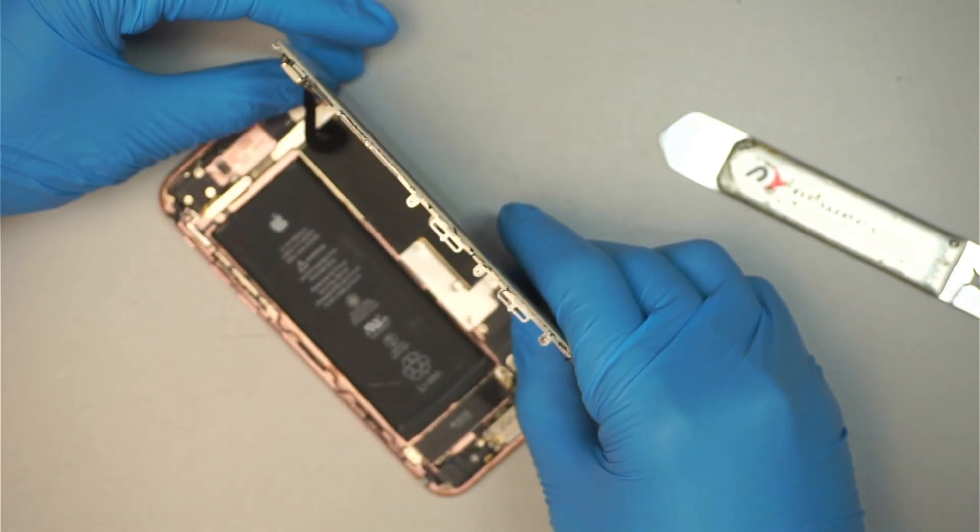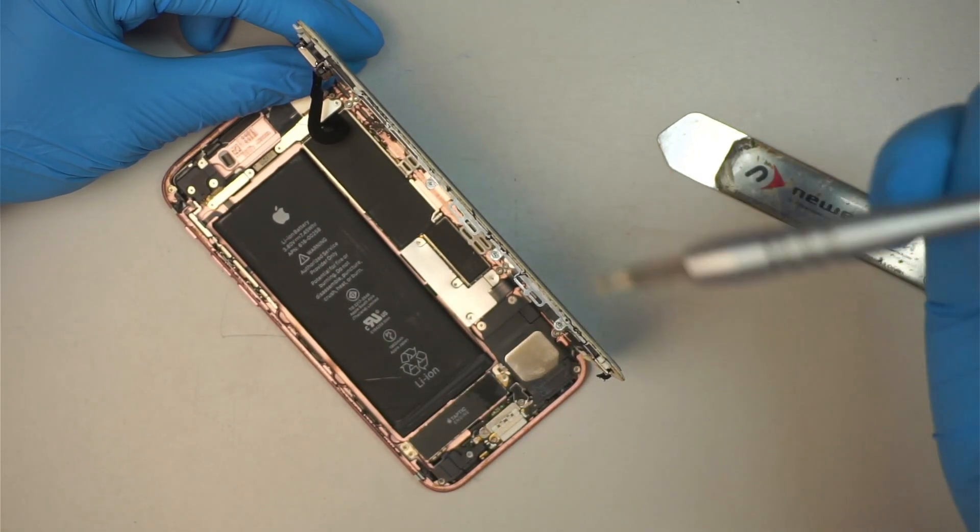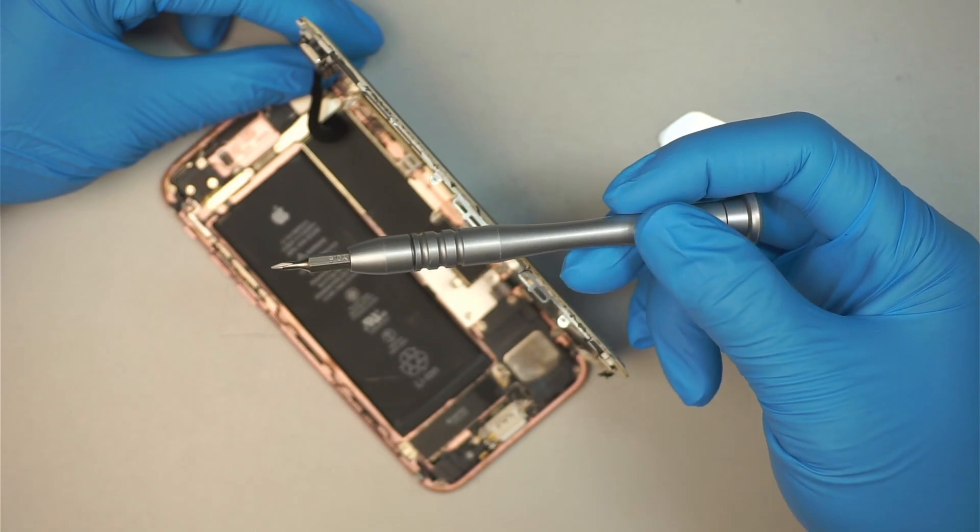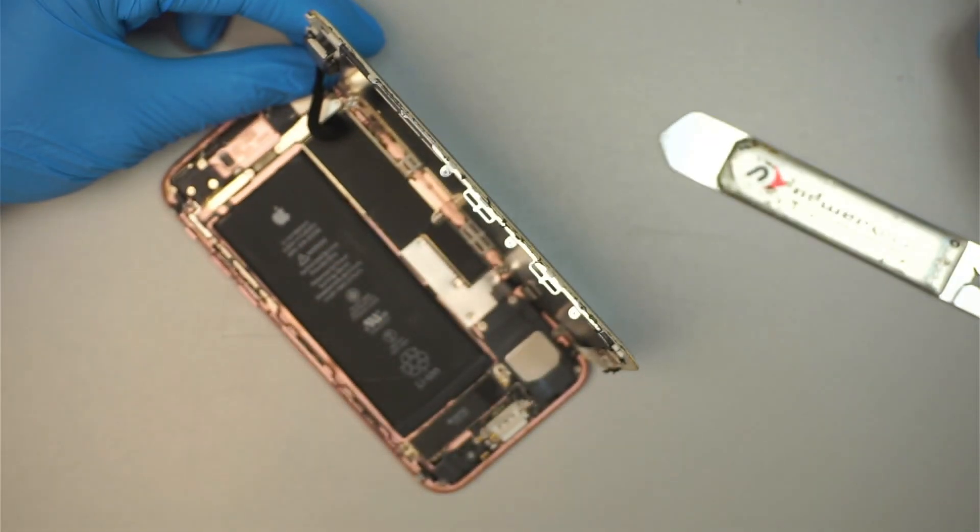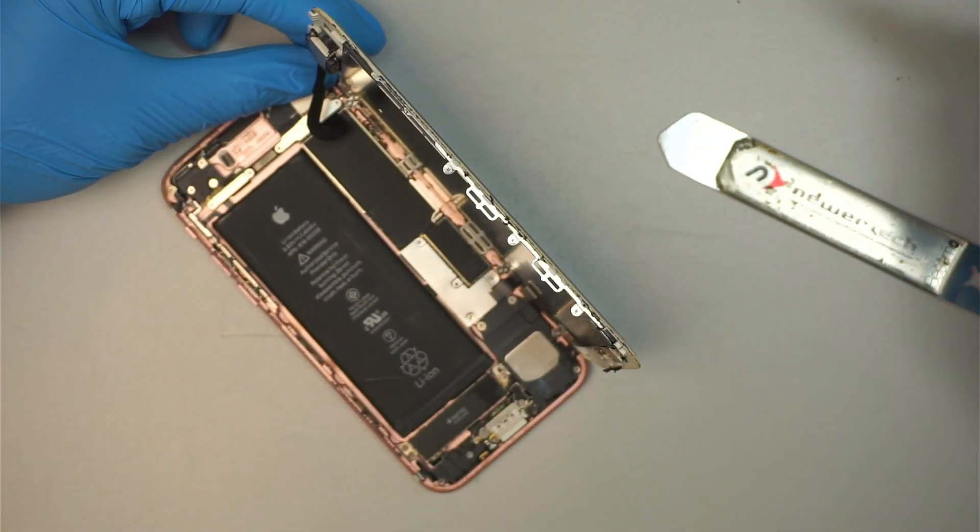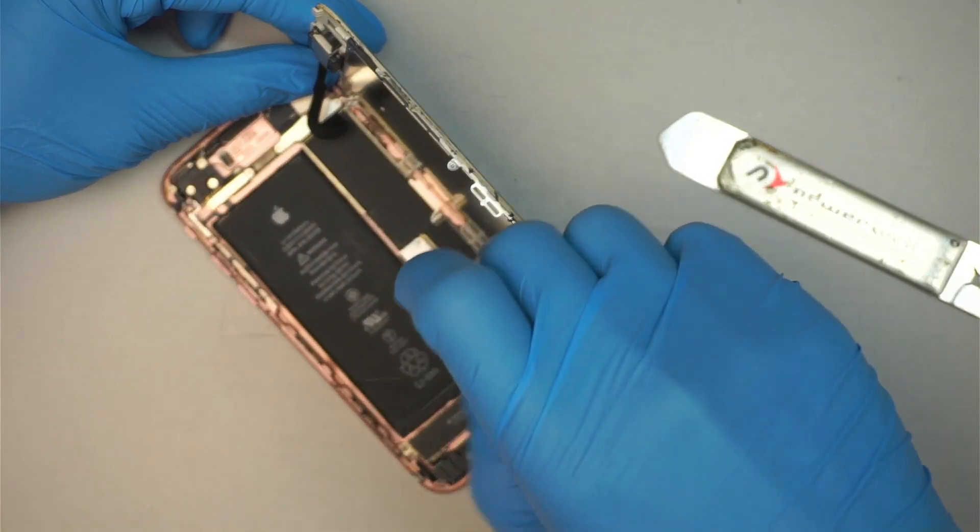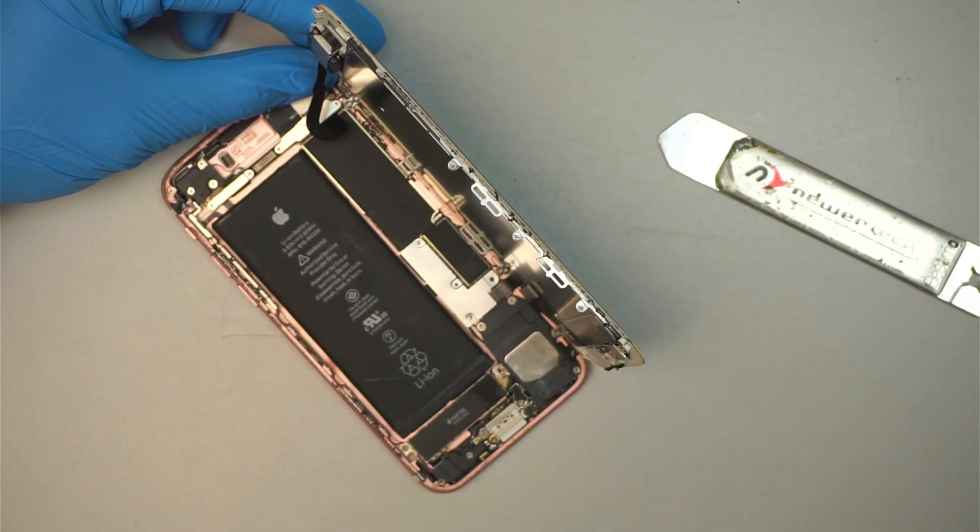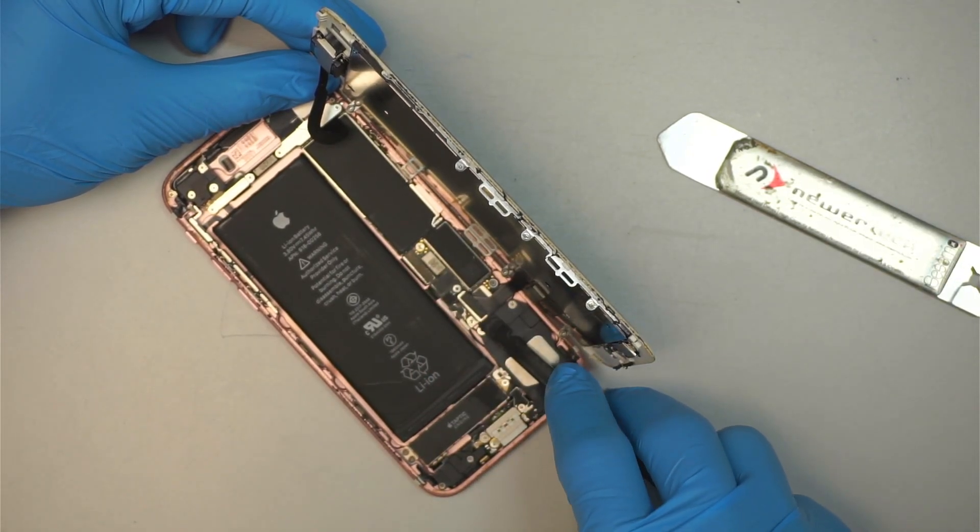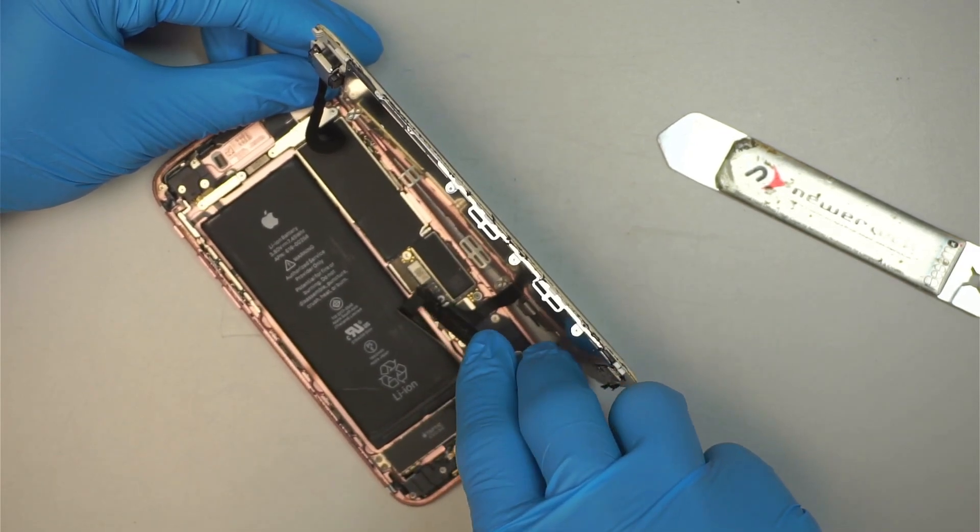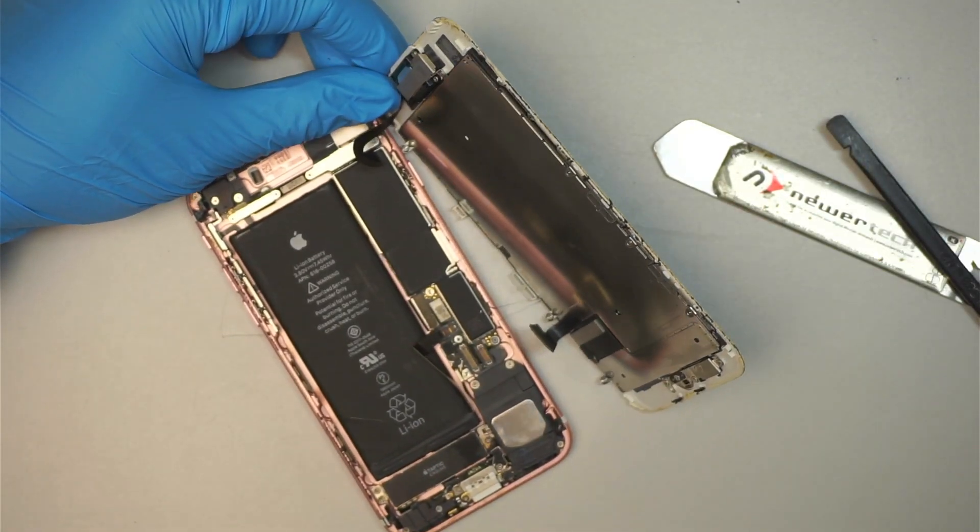Once you've cut the adhesive off, you're going to need a screwdriver which is the tri-point or the Y screwdriver, which is the 0.6, just a little Y-shaped screwdriver, and remove four screws because we need to remove the bracket. One, two, three, four screws, and then the bracket will just come right off. I'll be using a plastic prying tool to get in between that bracket, remove that, and disconnect the battery.